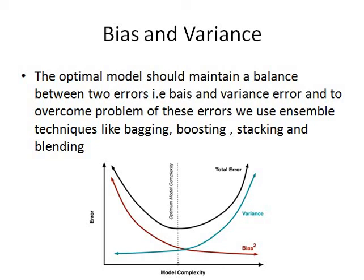Here we can see that an optimal model having low bias and low variance can be obtained by using Ensemble Techniques like Bagging, Boosting, Stacking, and Blending. And Random Forest is one of the Bagging Techniques. That's why we use Bagging for better results and better understanding of our model.